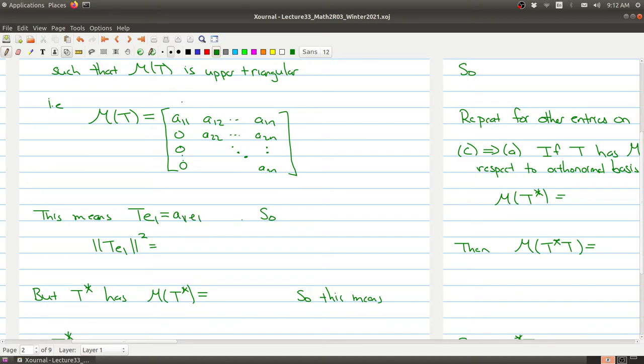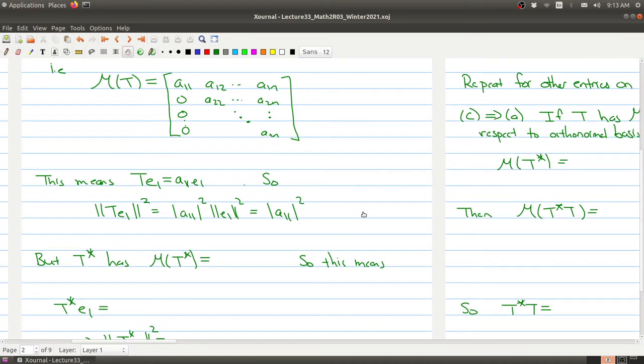So remember, this is the first basis element sent to it with these coefficients with respect to the basis elements E1 to En. So that tells me that the norm of this vector is equal to the absolute value of A11 squared times the norm of E1 squared. But E1 is part of an orthonormal basis, so it has norm 1. So we get the absolute value of A11 squared.